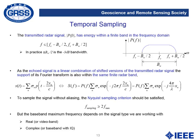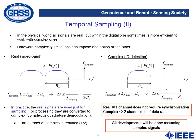The transmitted radar signal has energy within a finite band in the frequency domain. As the echoed signal is a linear combination of shifted versions of the transmitted radar signal, its Fourier transform support is always within the same finite radar band. To sample the signal without aliasing, we must fulfill the Nyquist sampling criterion: the sampling frequency must be at least two times the maximum frequency. There are two options: real or video band, or complex/baseband with IQ sampling. In the physical world all signals are real, but within the digital domain it is sometimes more efficient to work with complex signals.